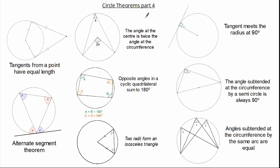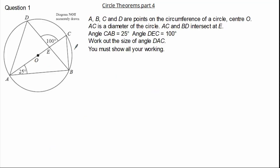So let's have a look at a question. This question states A, B, C, D are points on the circumference of a circle with centre O. We know AC is a diameter of the circle and AC and BD intersect at point E. The angle CAB is 25 degrees and the angle DEC is 100 degrees. We are asked to work out the angle DAC and we must show all our working out.